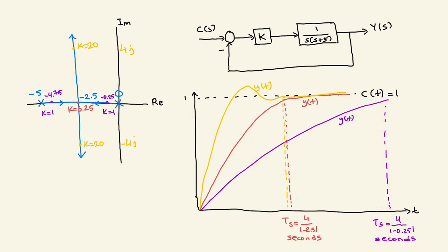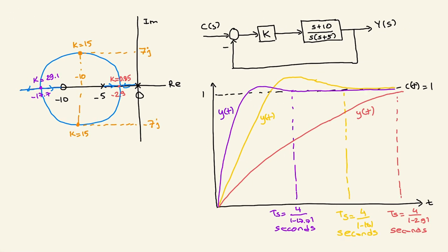If you choose gain k at the critical damping point, k equals 6.25, both poles are at minus 2.5 and settling time is 4 divided by 2.5 seconds — the system is faster with no oscillations. If you increase gain further to k equals 20, the system will have oscillations, but the real part of the closed-loop poles is still minus 2.5, so settling time does not change. The system gets more oscillatory as k increases further.